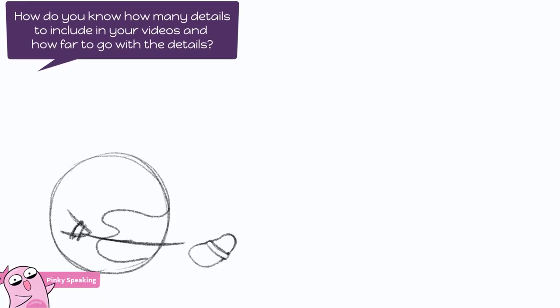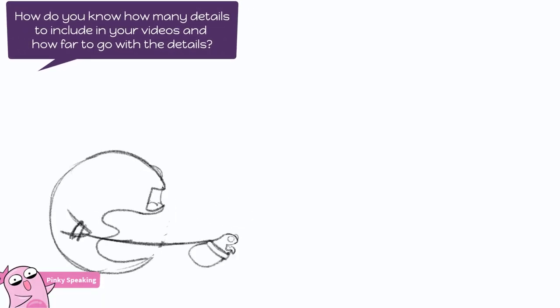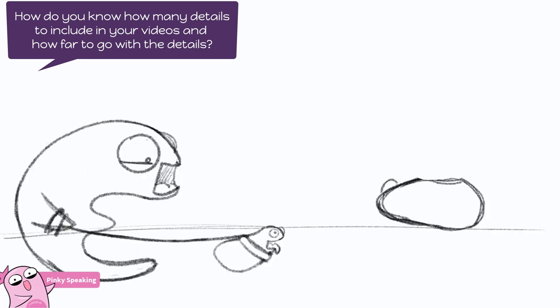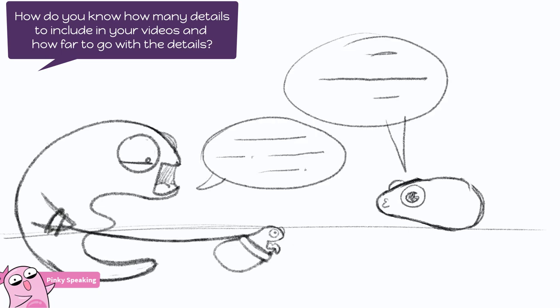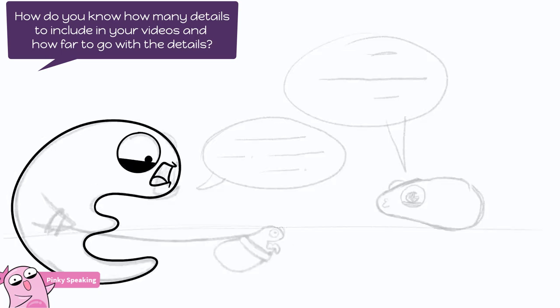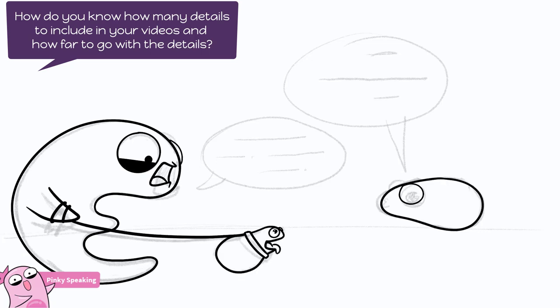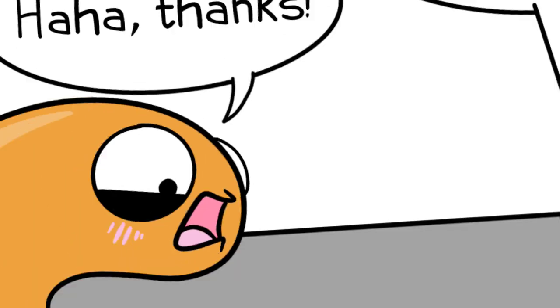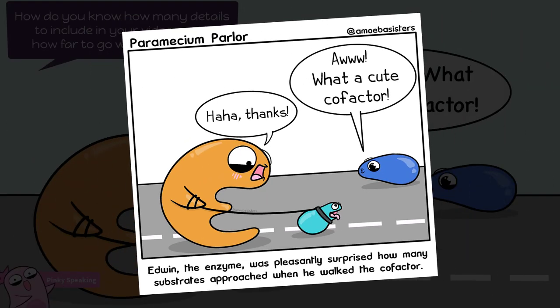How do you know how many details to include in your videos, and how far to go with the details? Details and exceptions in biology are fascinating and we want to try to encourage the exploration of them. But our videos are really short, and including or addressing all of them in the video time itself isn't possible. I try to focus on the main concept I'm teaching. We've gotten better about avoiding the words 'never' or 'always' because of all those exceptions, and we've gotten better about including further reading suggestions in our video descriptions so people can learn more about the details.